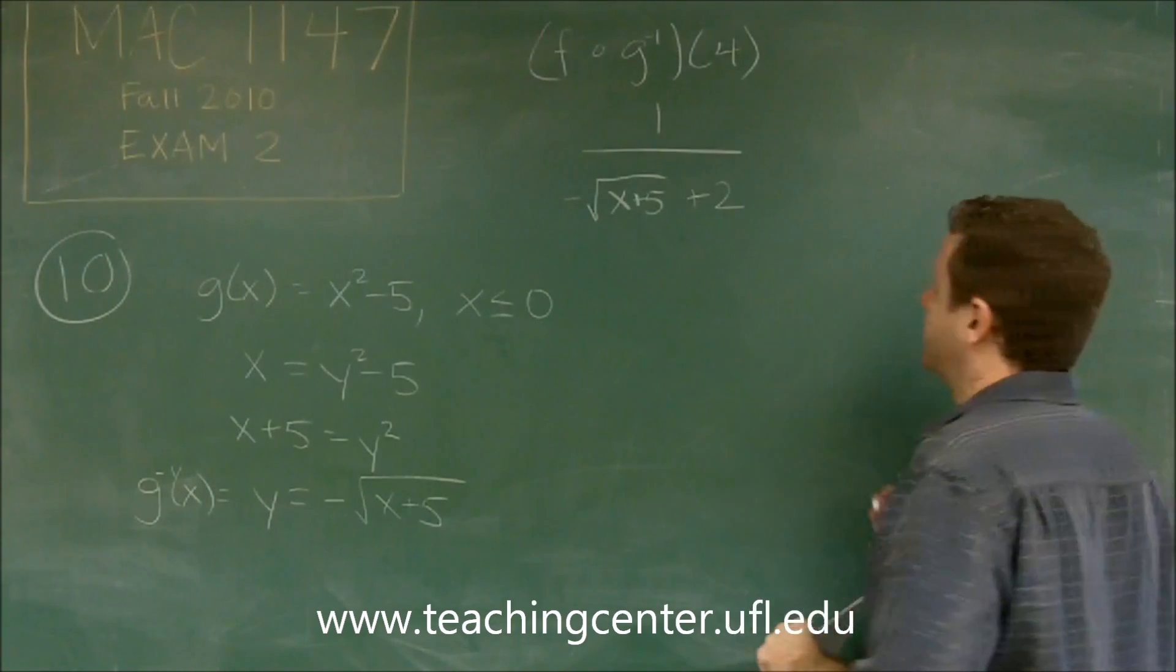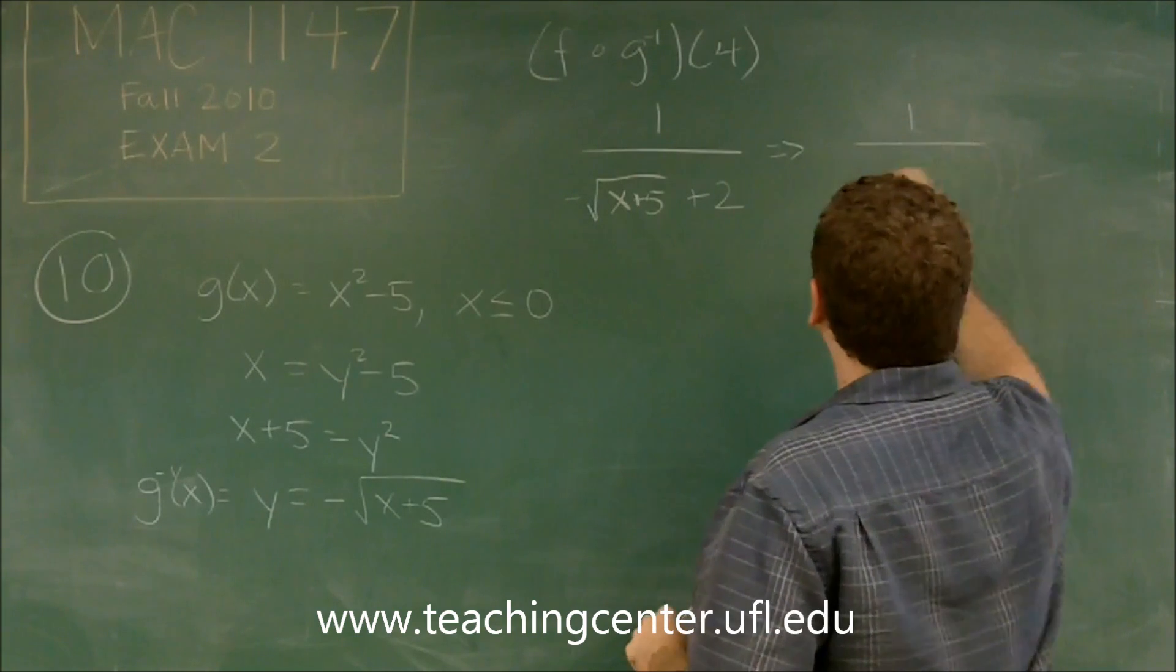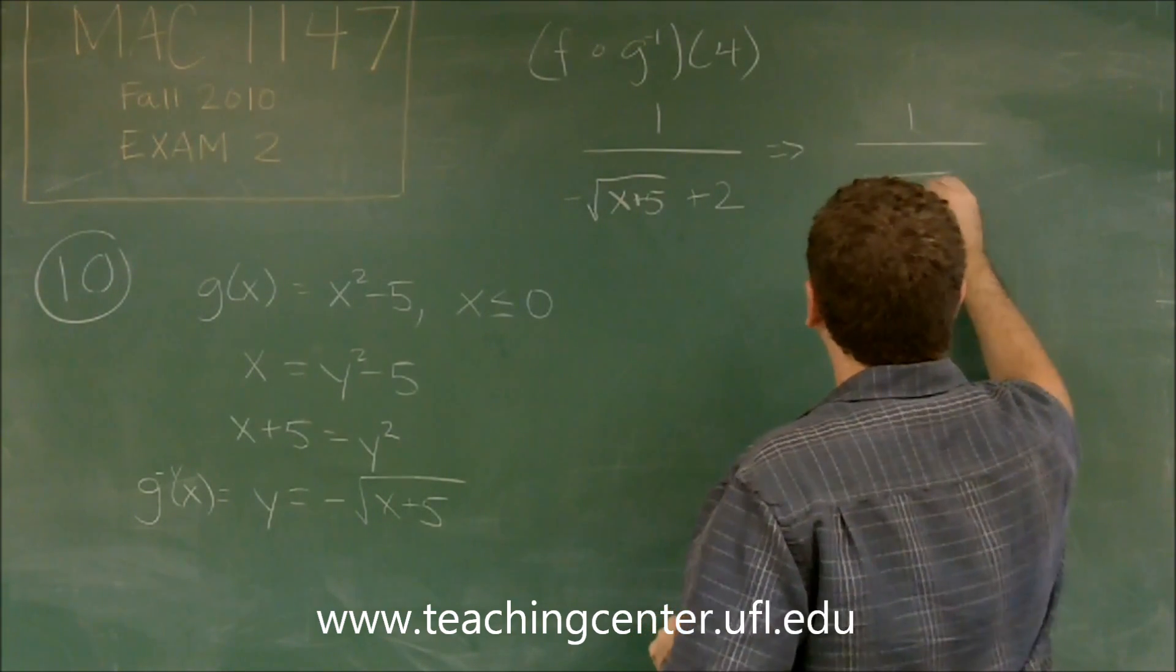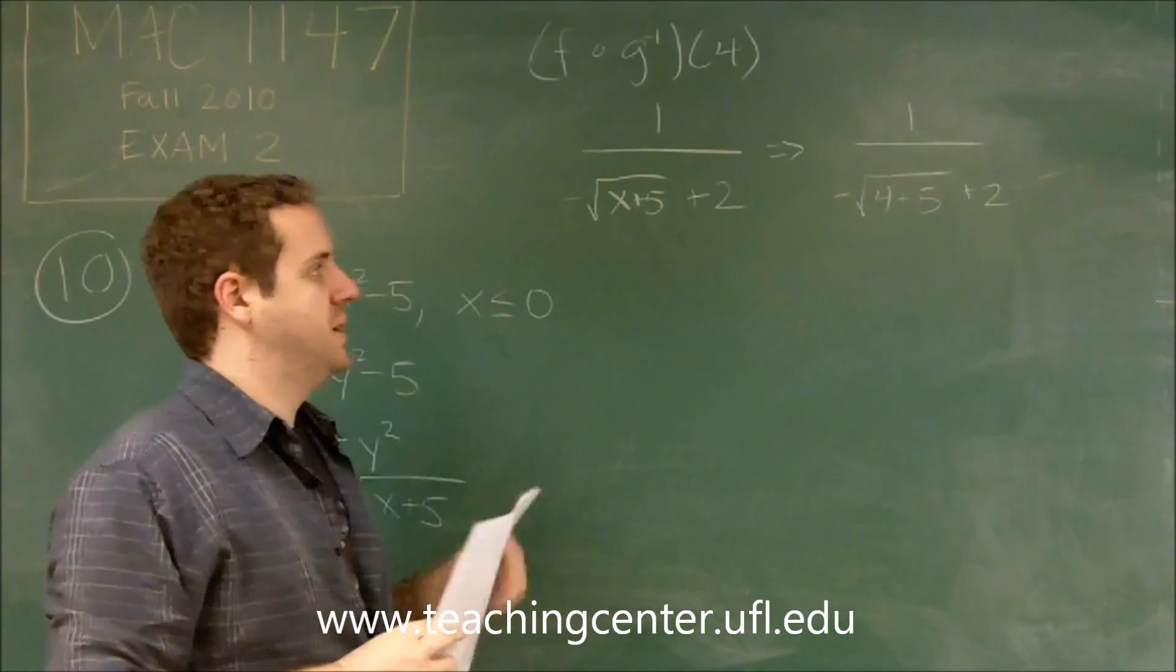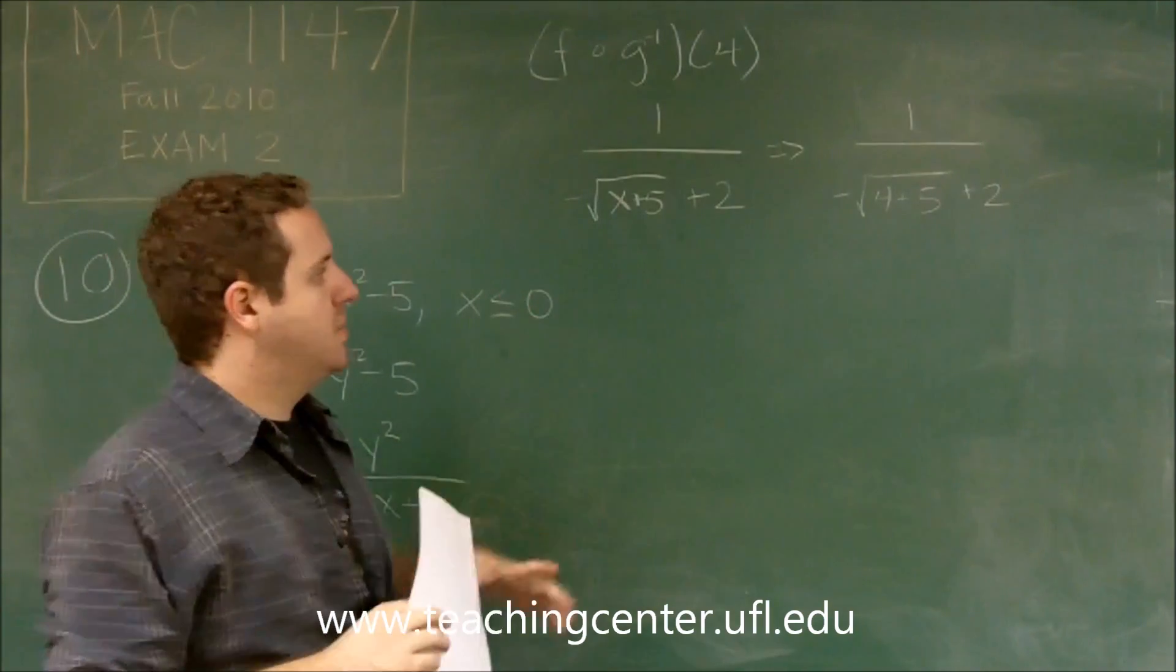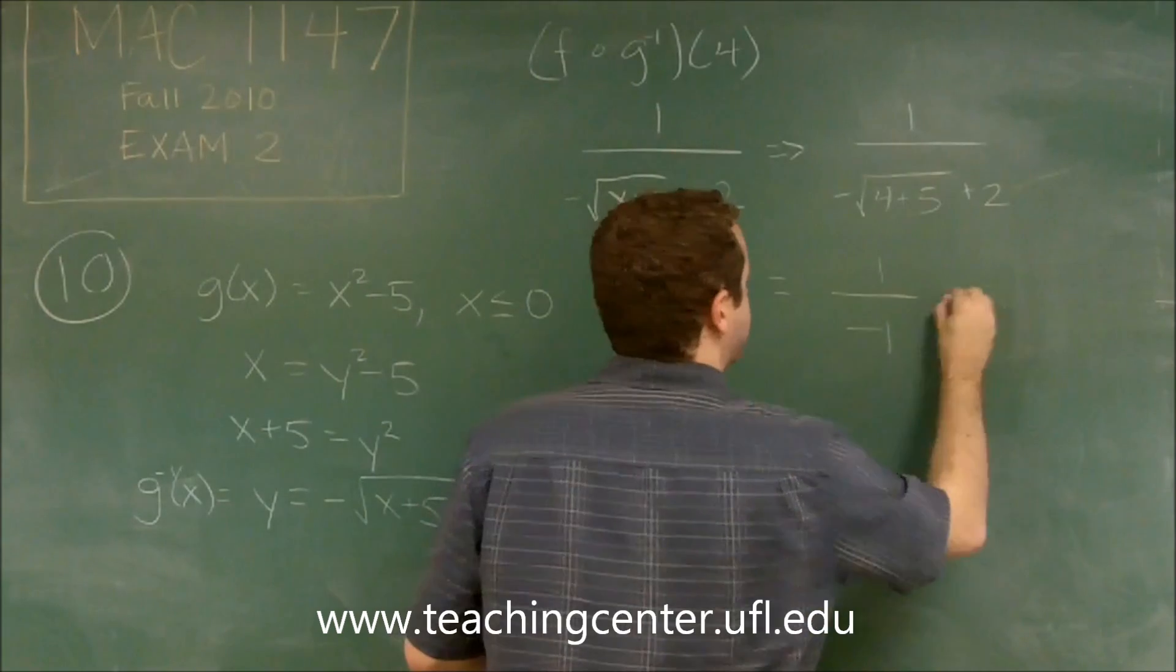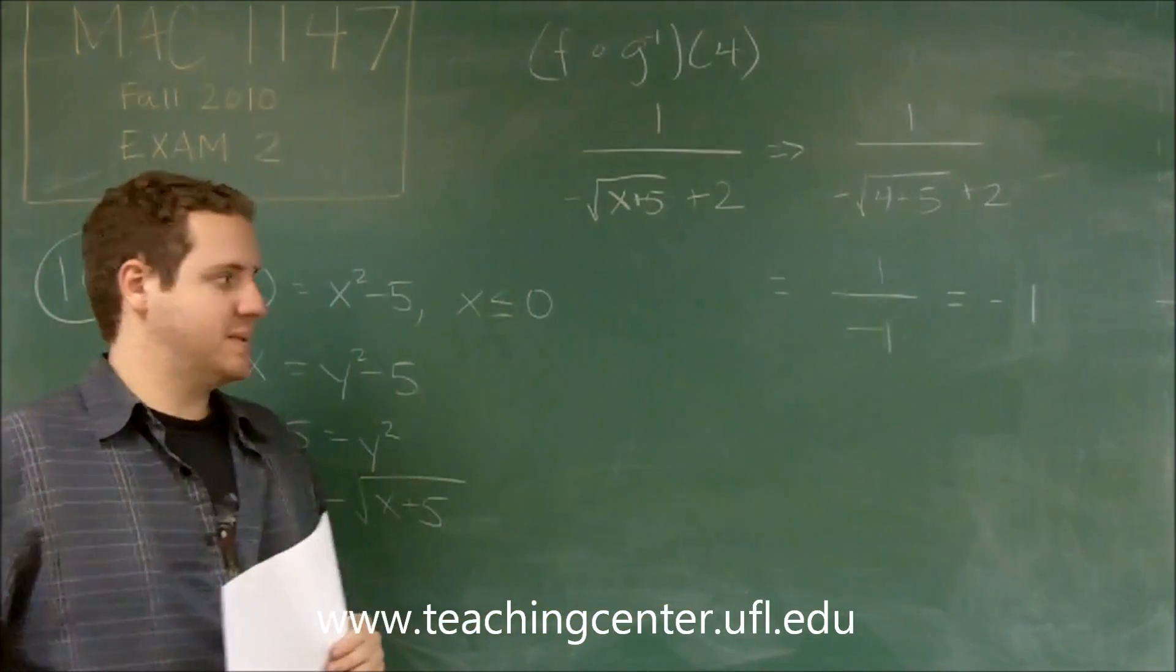so we just plug in 4 for x. So we get 1 over negative square root of 4 plus 5 plus 2. 4 plus 5 is 9, so we have square root of 9 which is 3. Negative 3 plus 2 leaves you with the denominator of negative 1. So we just get negative 1, which is answer choice A.